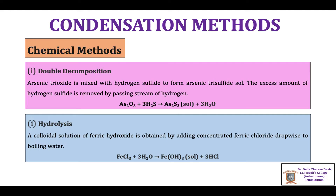Next is hydrolysis. A colloidal solution of ferric hydroxide is obtained by adding concentrated ferric chloride dropwise to boiling water. FeCl₃ plus H₂O gives Fe(OH)₃, which is the sol of ferric hydroxide.